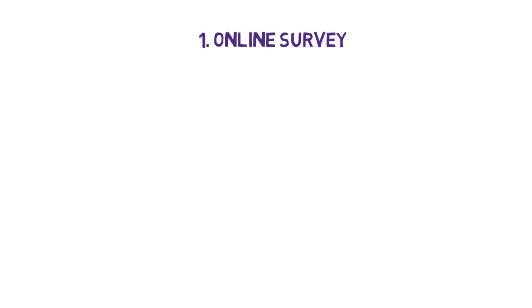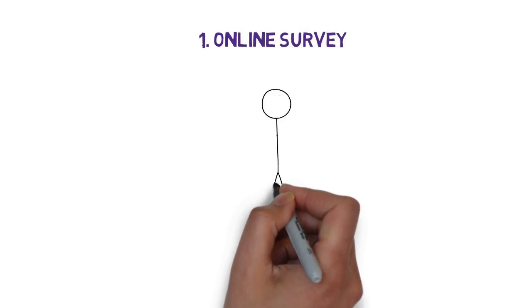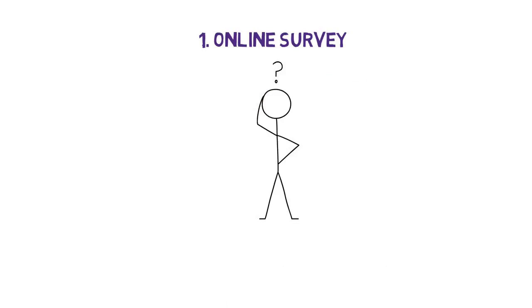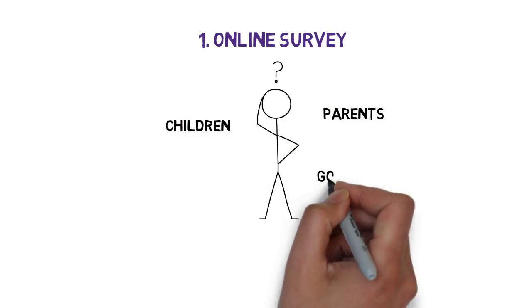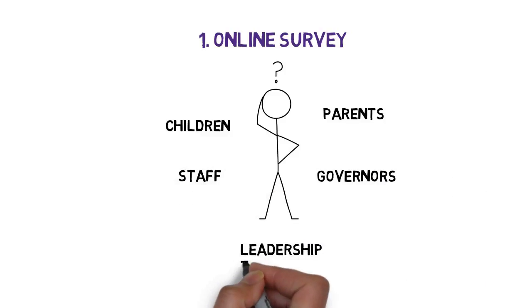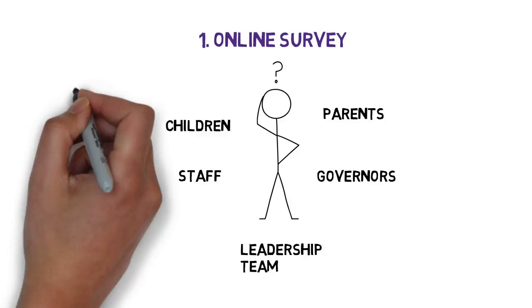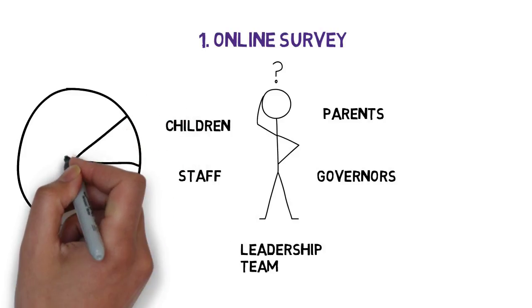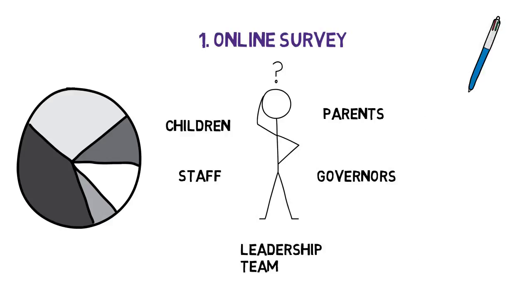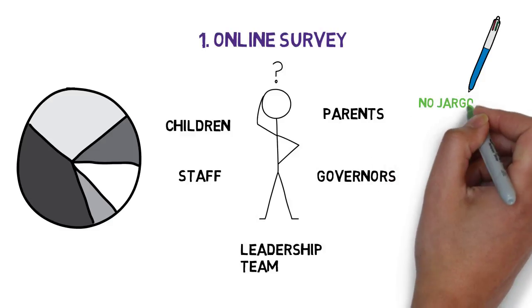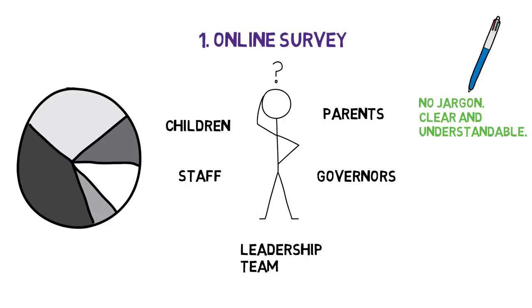The audit is split into three parts. Part 1: we provide you with access to an online survey. We ask the key stakeholders in your school a range of questions about behaviour. We question parents, children, governors, teachers, and your leadership team about what they think about different aspects of behaviour, and then we give you a detailed breakdown about how each group replied. We take great care with how we phrase the questions for your students, parents, and governors, so the language is clear and understandable. The children's and parents' surveys especially are short and to the point to encourage participation.